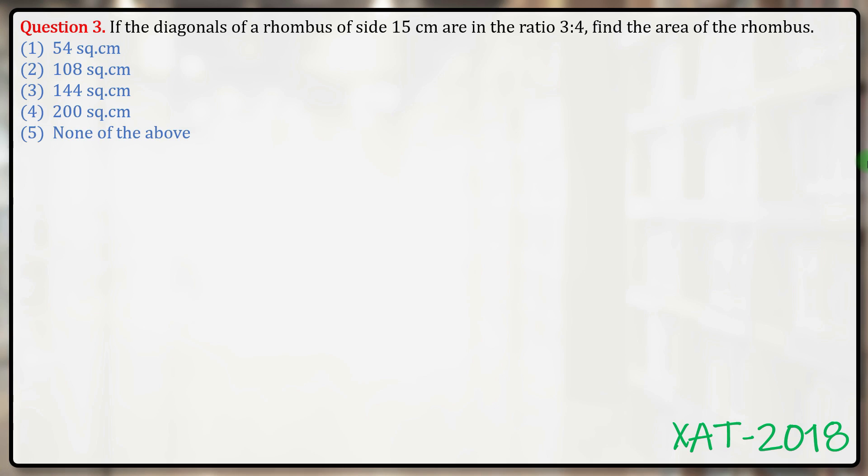Area of the rhombus - we need to find half D1 D2, that means half AC into BD. That is what we need to find out. What we have is diagonals of a rhombus of side 15 centimeters are in the ratio 3:4.